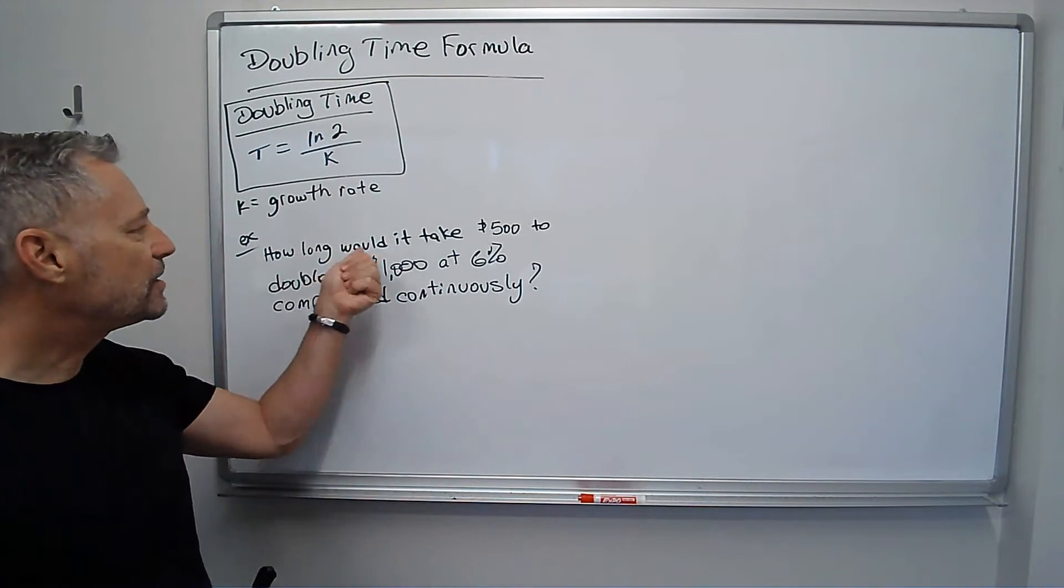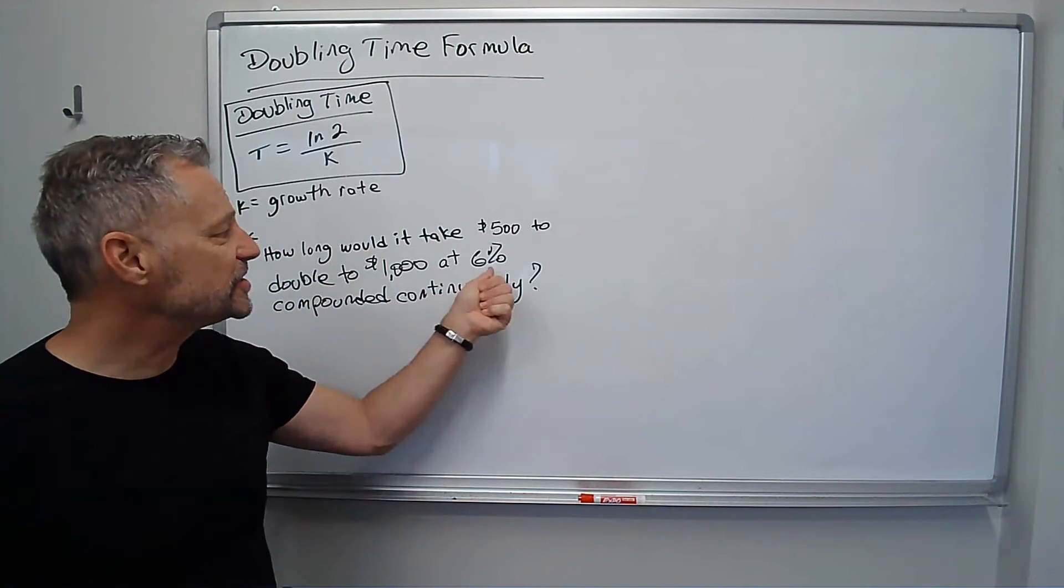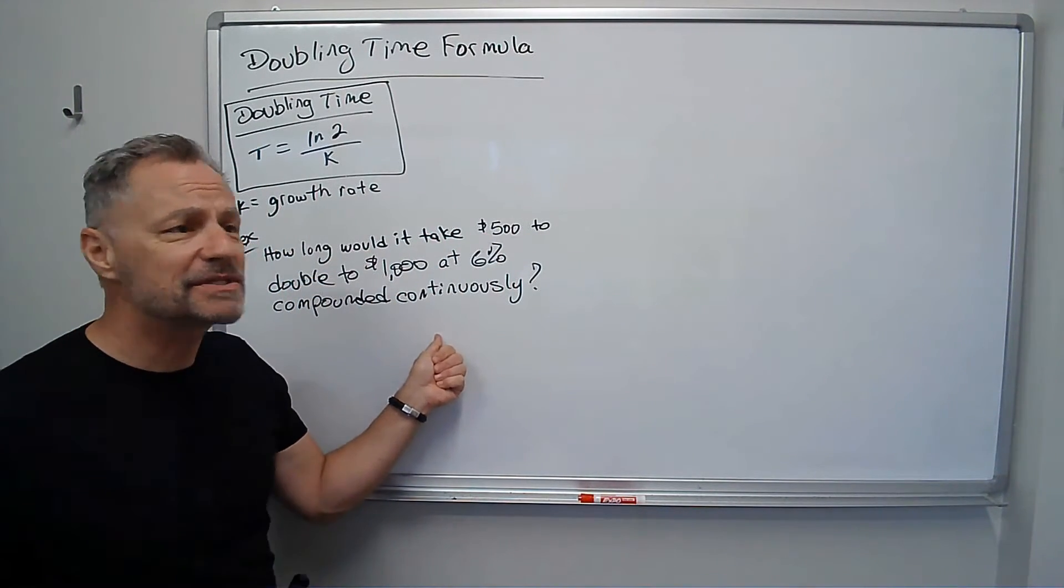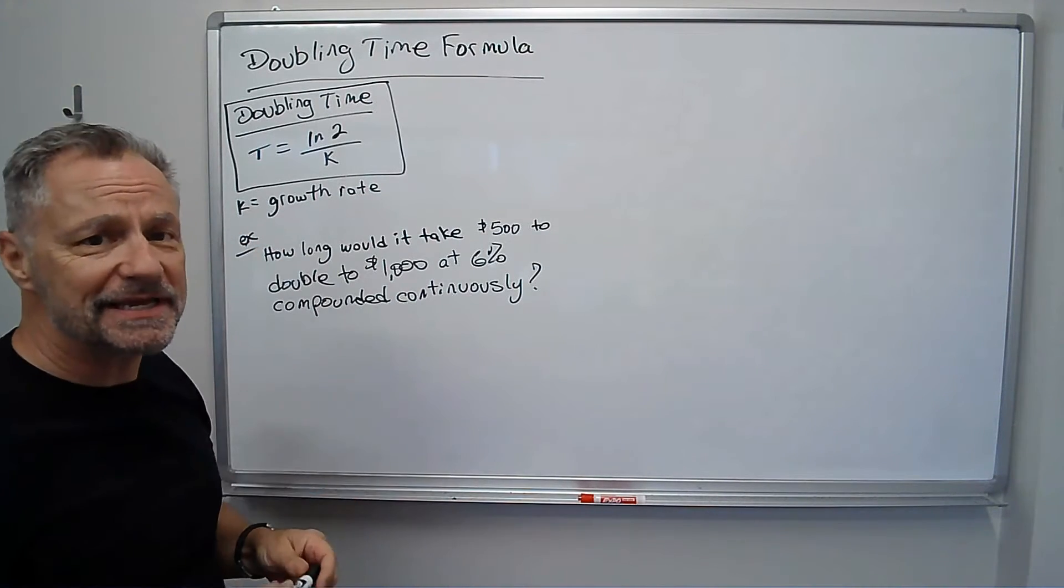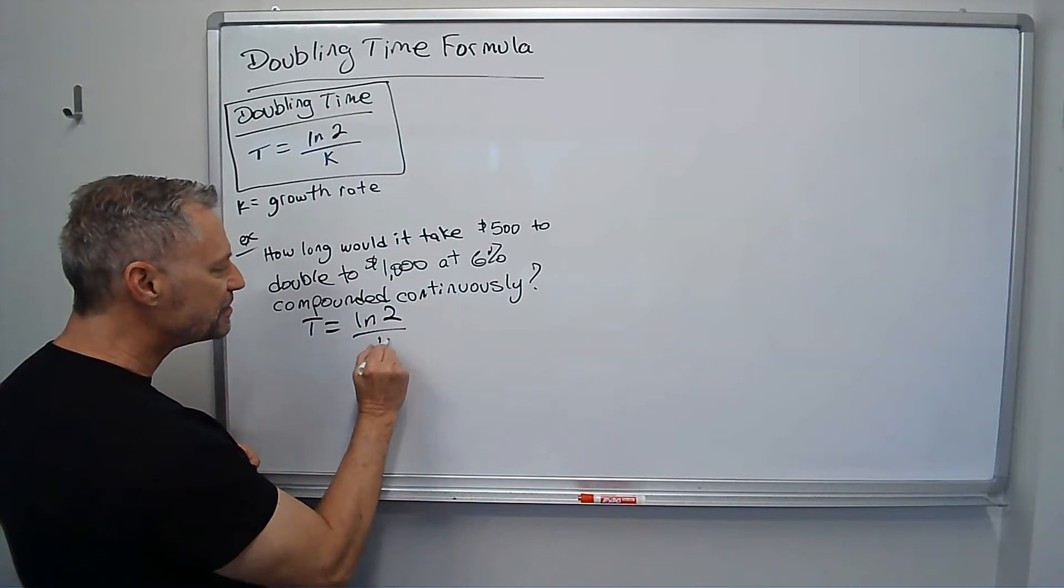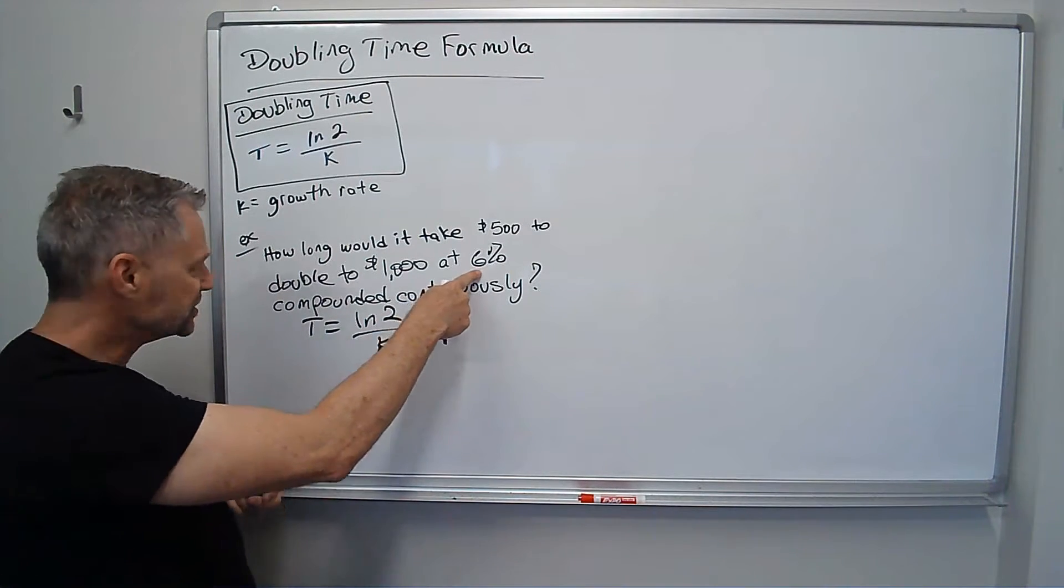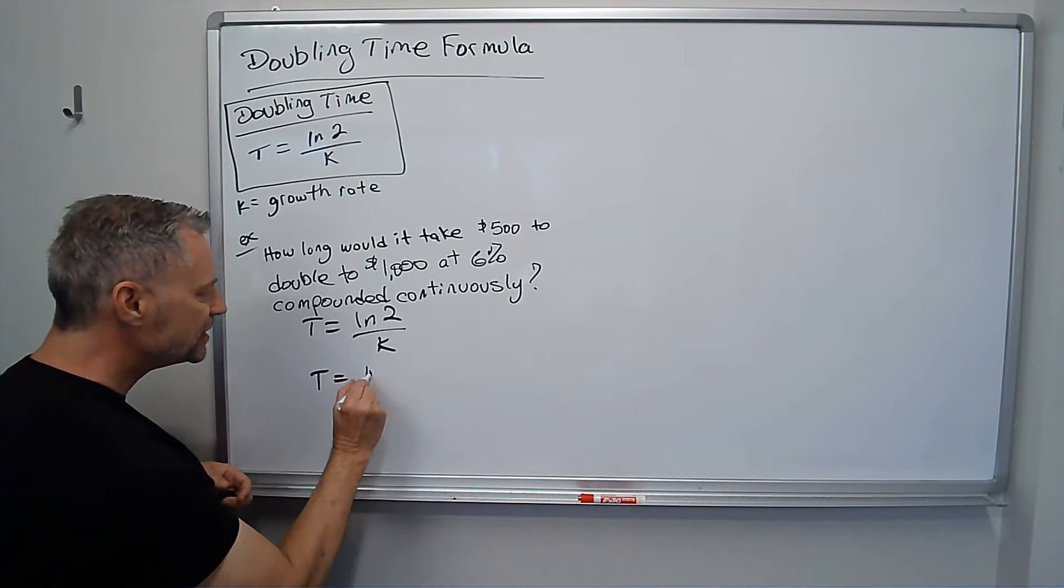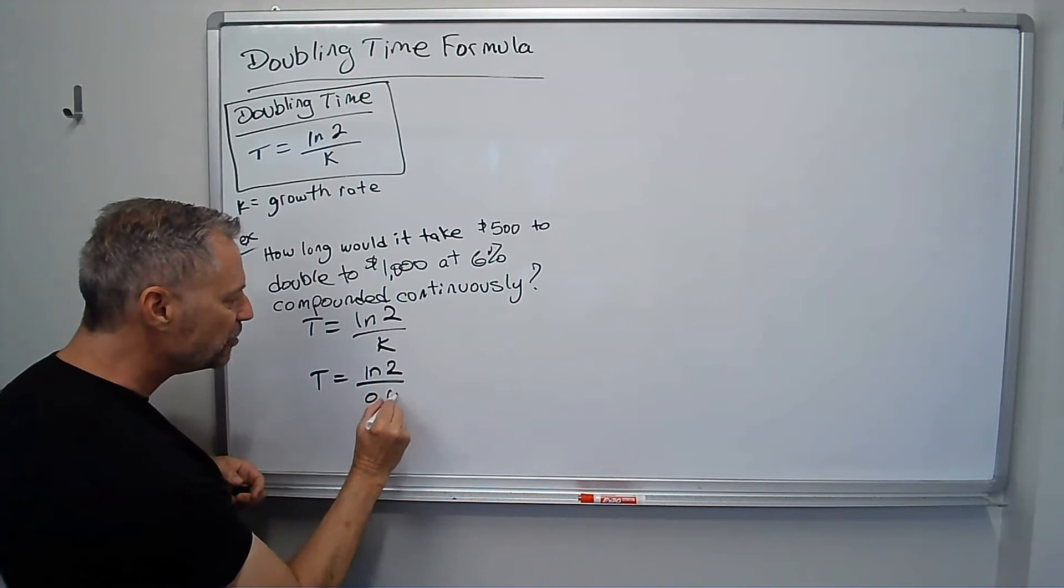Okay, so how long would it take $500 to double to $1,000 at 6% compounded continuously? Notice the amounts don't even play into it. We just say, t equals ln of 2 divided by k, k is the growth rate, they say 6%. So t is ln of 2 divided by 0.06.